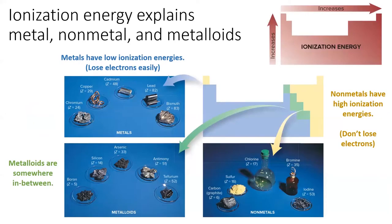The difference between metals, nonmetals, and metalloids can be explained by their ionization energies. Nonmetals, in the upper right part of the table, have high ionization energies. It is very difficult to make these elements lose electrons — in fact, they usually gain or share electrons in their chemistry.